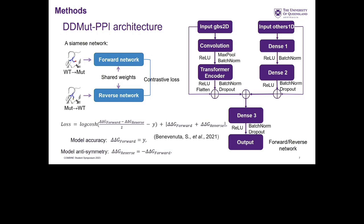A special loss function is used. Minimizing this loss not only ensures model accuracy — pushing predictions for the forward delta delta G toward the actual experimental values — but also optimizes model anti-symmetry, so that the prediction for the reverse mutation approaches the negative of the prediction for the forward mutation. Both terms approach zero together, enforcing symmetric predictions.